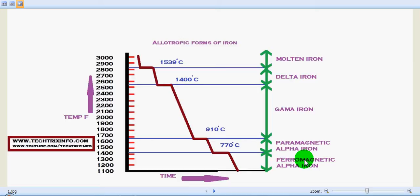Let's see the two different forms of alpha iron. One is the ferromagnetic alpha iron, which occurs from normal temperature to about 770 degrees Celsius.